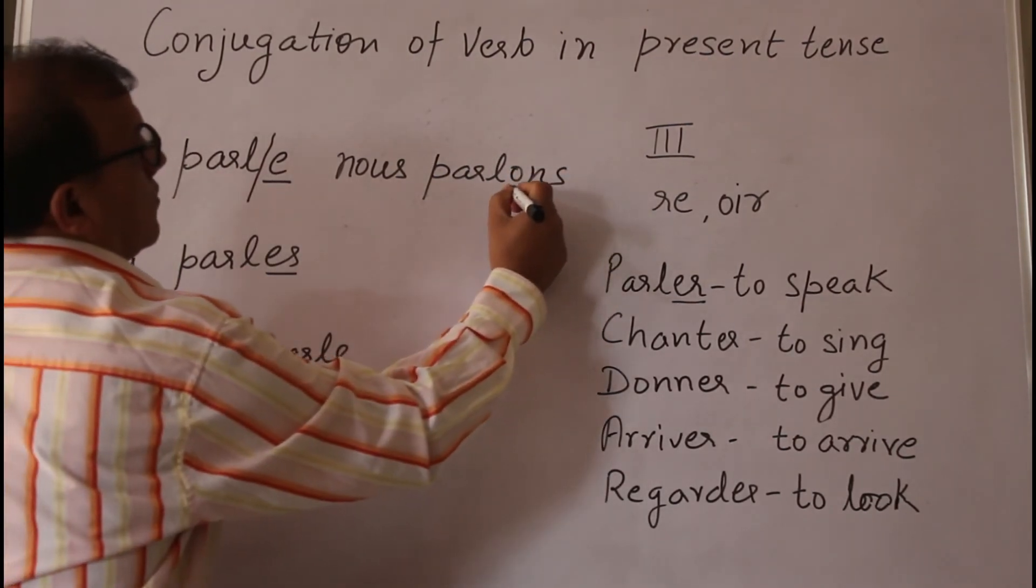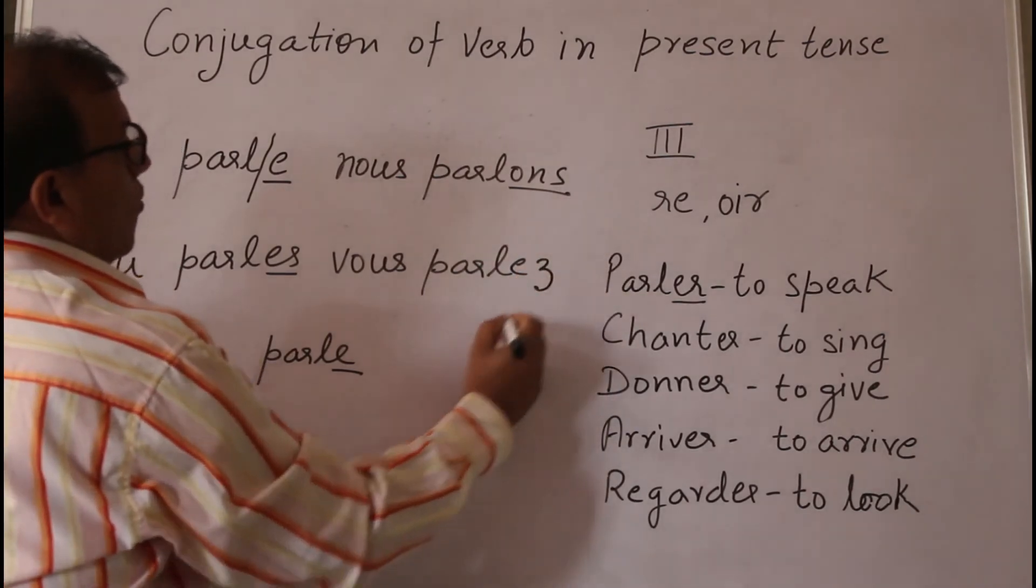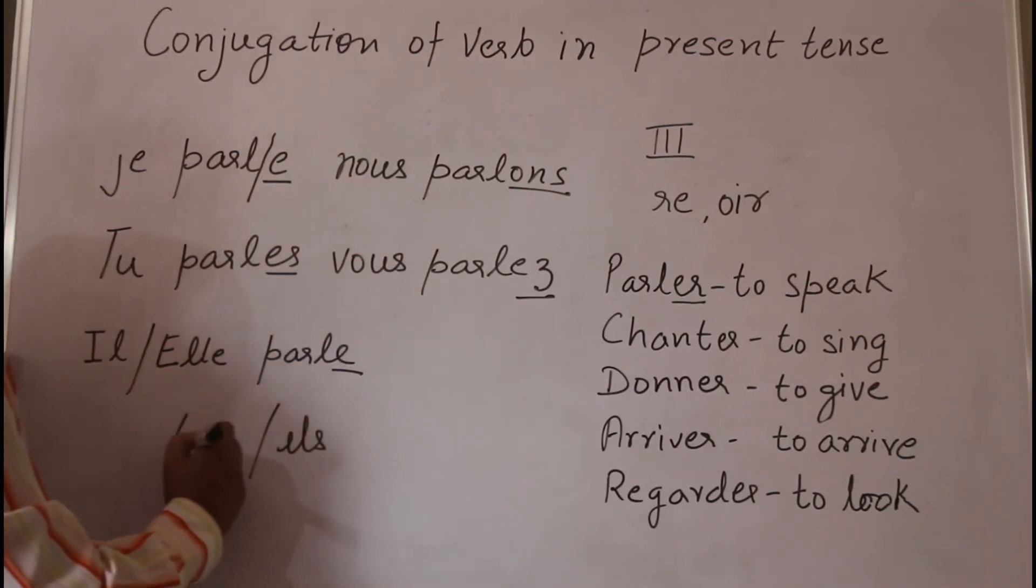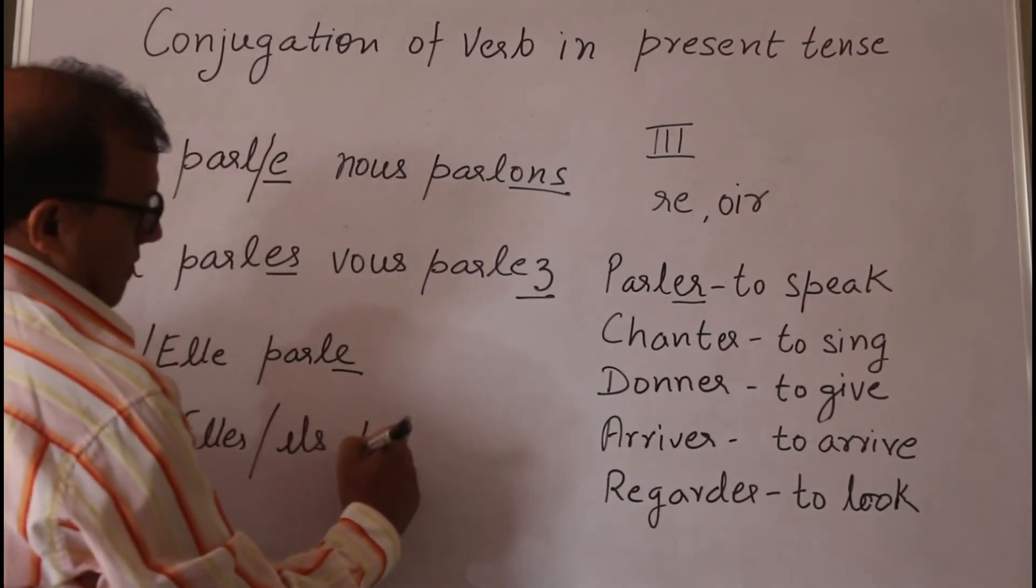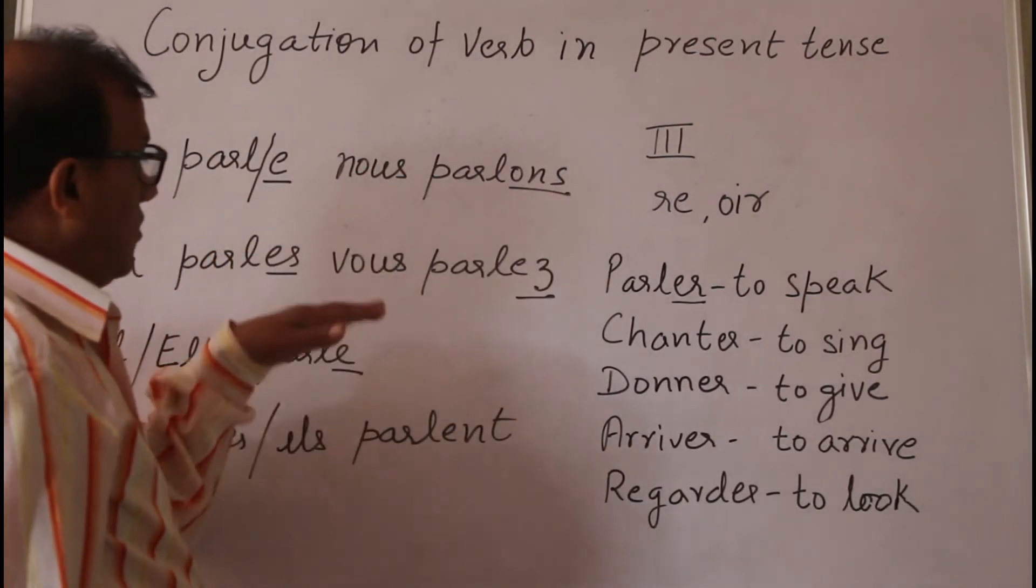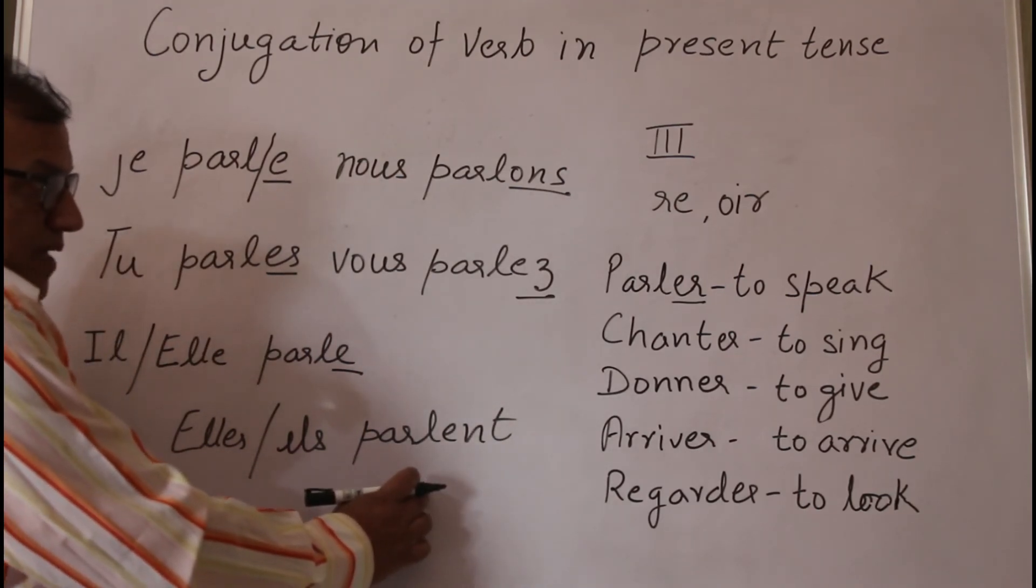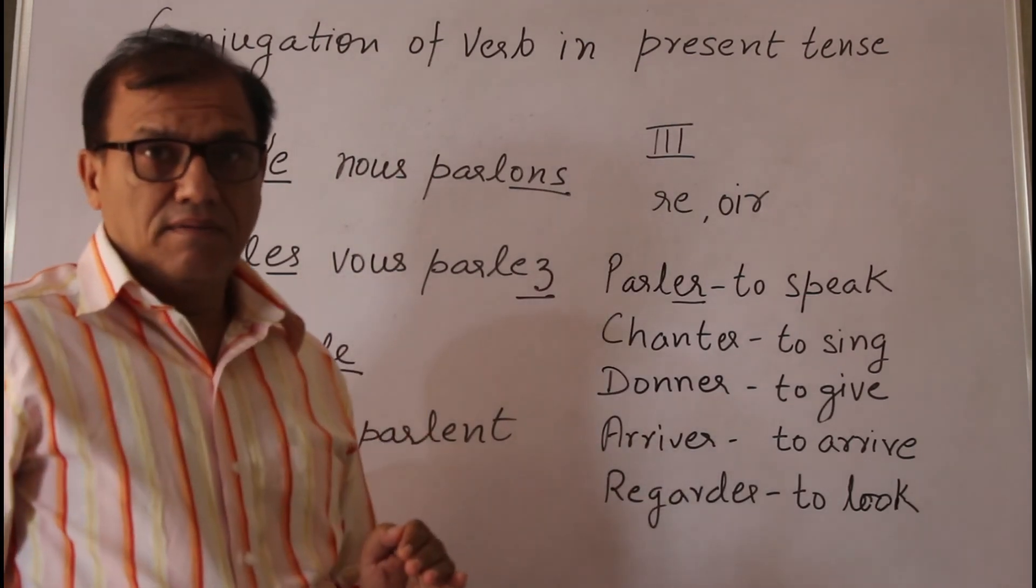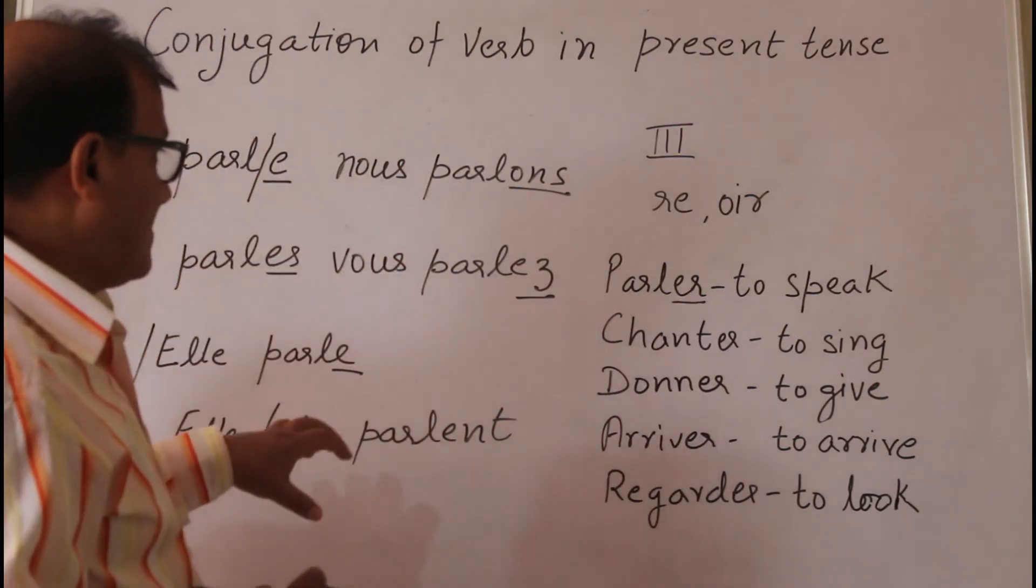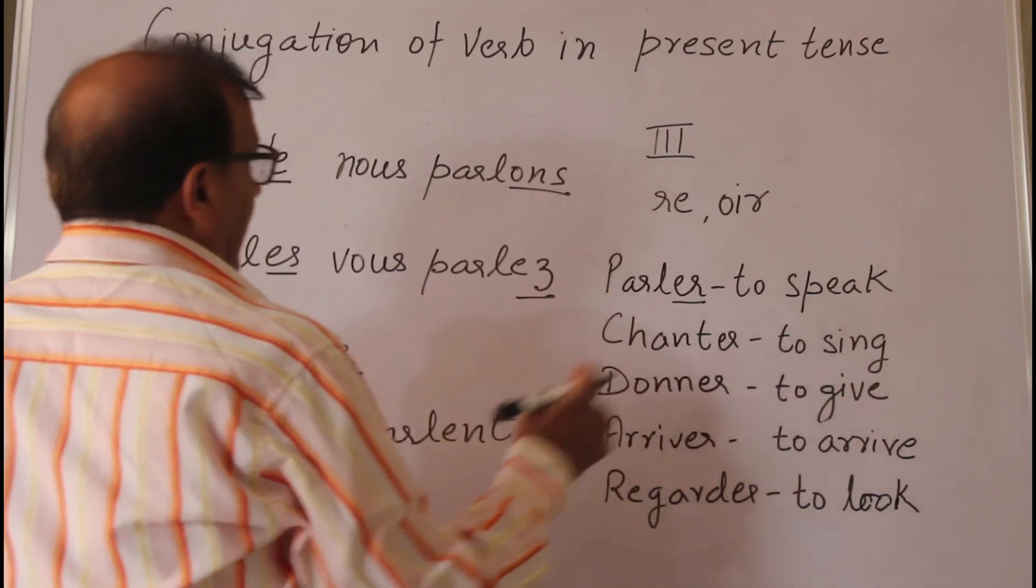Now we can conjugate it: we speak, it is nous parlons. Vous parlez, you speak, plural number. Ils or elles parlent means they speak. So all the verbs which are ending with ER, they will follow the set pattern. Now with the help of this, we can conjugate other verbs also. For example, chanter means to sing.